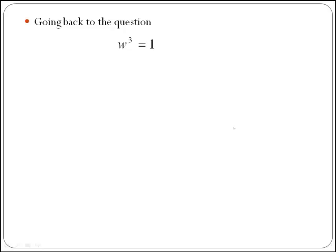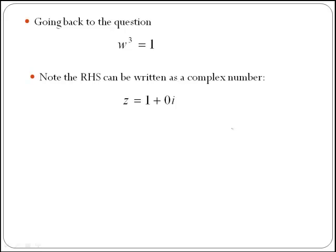In order to do that, you have to realize that your right hand side can be written as a complex number because 1 is exactly the same as 1 plus 0i. So we have a complex number with real part equal to 1 and imaginary part equal to 0.